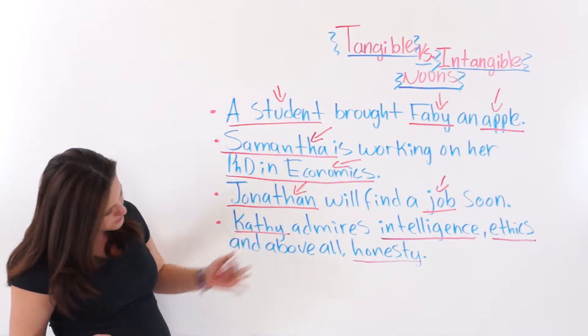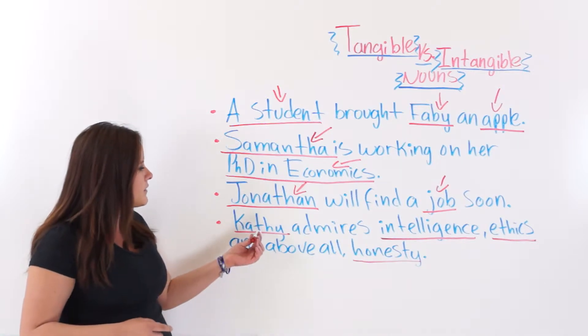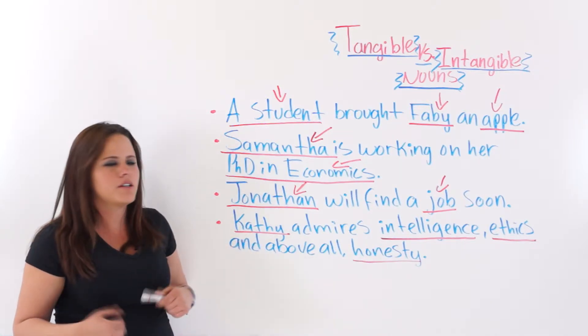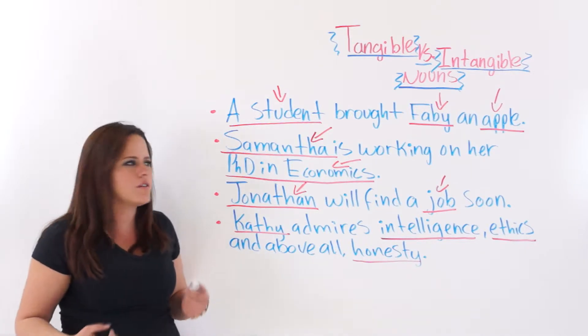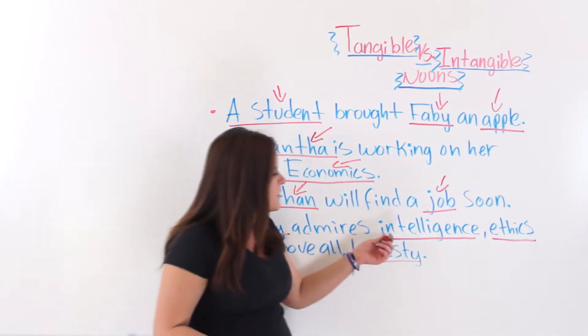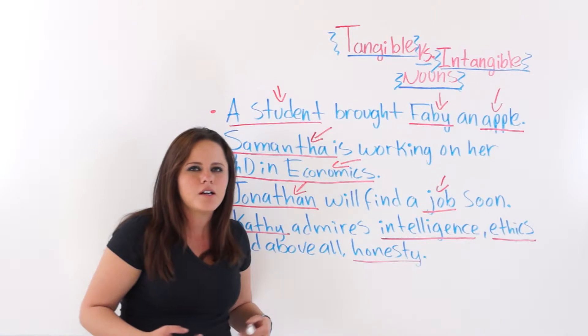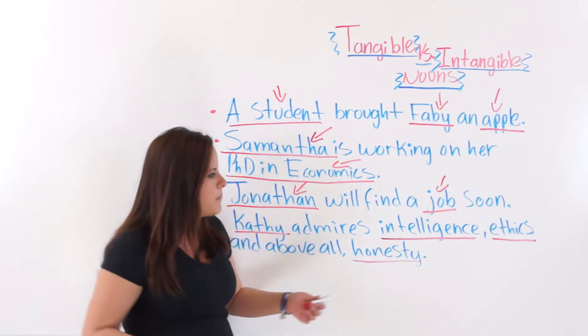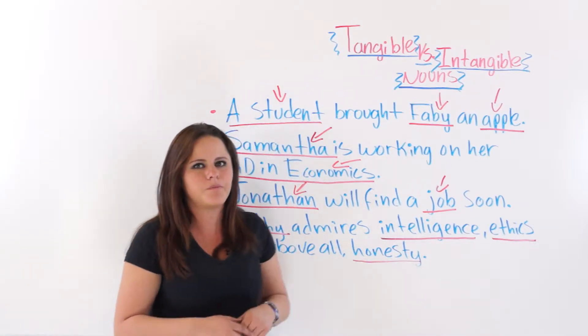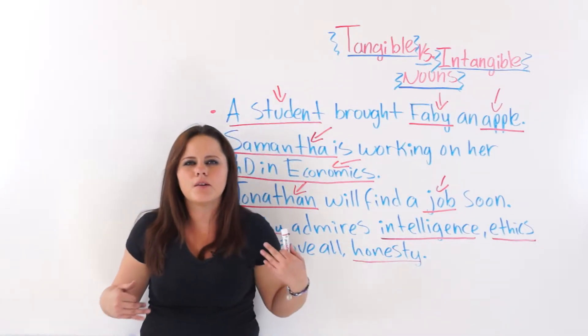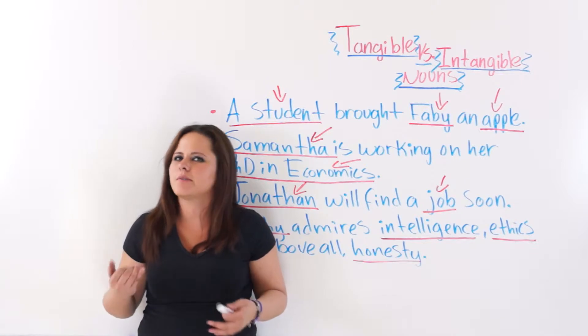Soon, Kathy—tangible noun—admires intelligence, ethics, and above all, honesty. We have Kathy, which is a tangible noun because you can see it, you can touch it, you can smell it. And intelligence is an intangible noun because it is an idea. Ethics is also an idea or a thought, and honesty too.